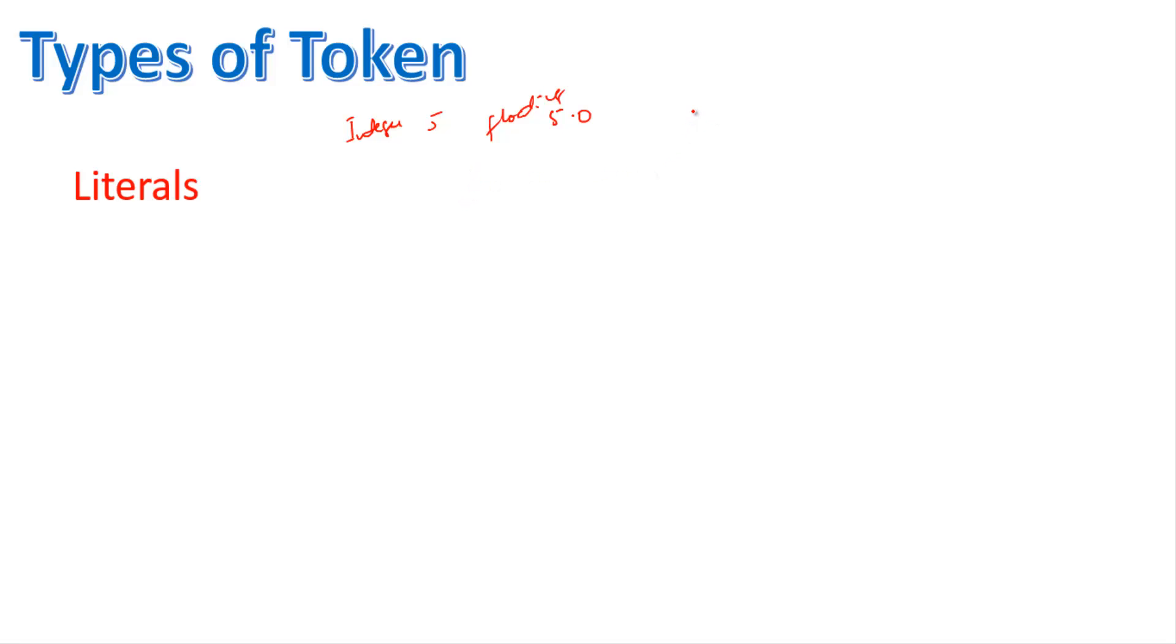Now if we suppose write 'a' here, this is the character literal. If we write here, say 'hello' in double quotation marks, this is the string literal.